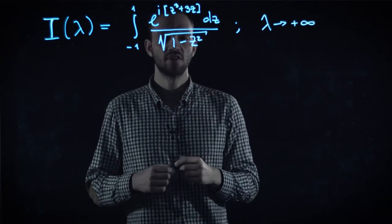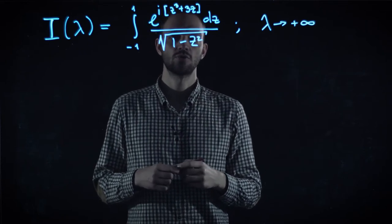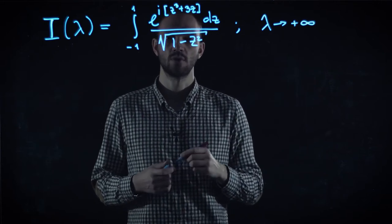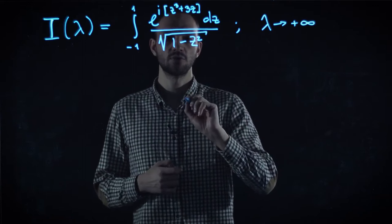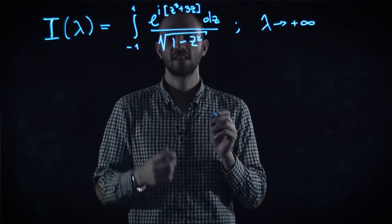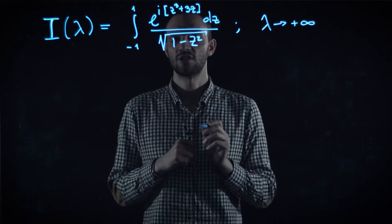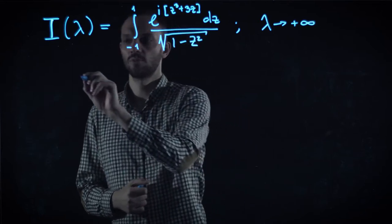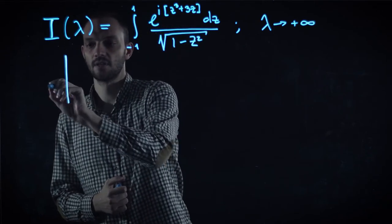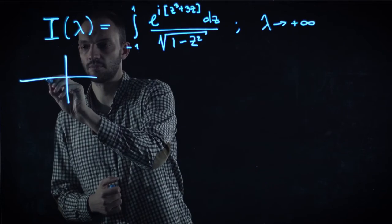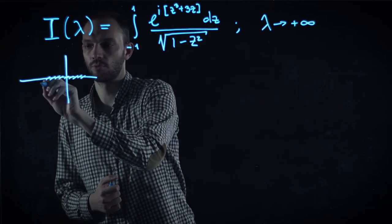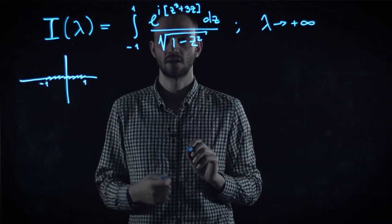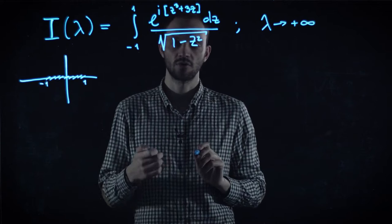When you are dealing with such an integral, first of all, the most important thing to do is to choose a proper cut, a proper definition of the branch of the square root function. And we will assume that this is just an arithmetic square root for z real in between minus 1 and 1. And to make this meaningful for arbitrary z, it is convenient to make a cut from minus 1 to 1 with upper part of the cut of the value of square root to be defined according to its arithmetic value.